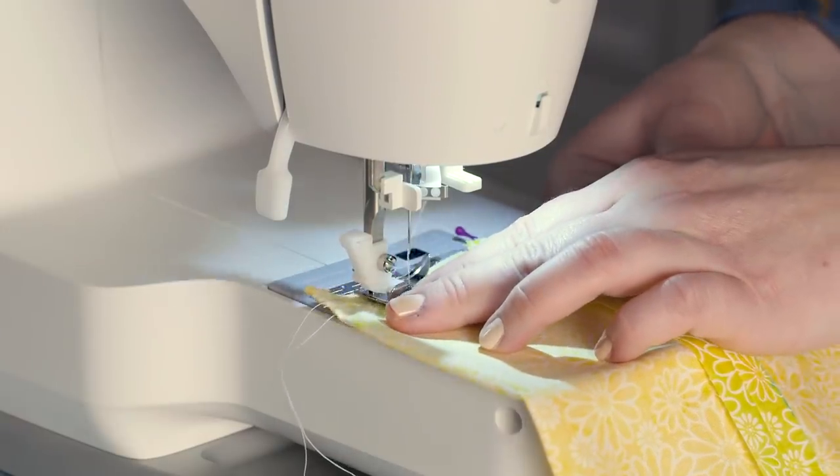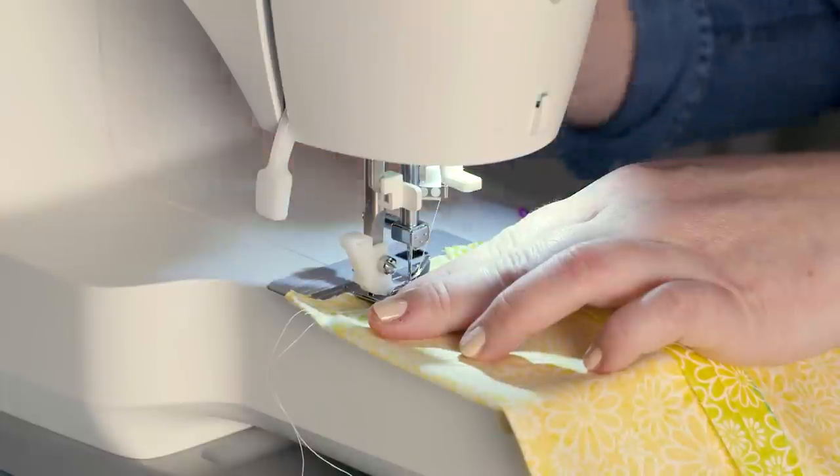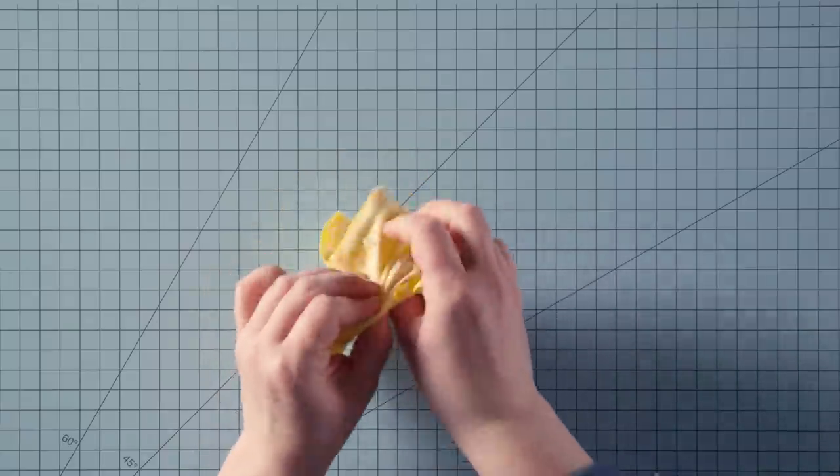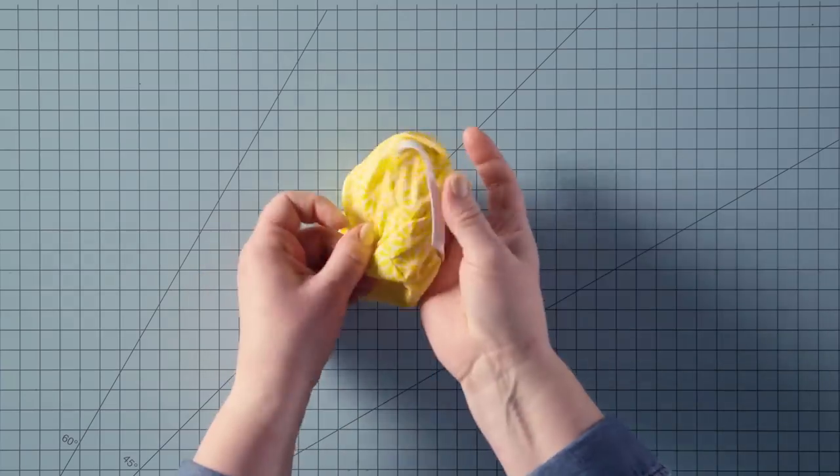Then just sew along the edges to close up the sides and secure the elastic. Turn the fabric right side out, press it, and you're ready to add pleats.